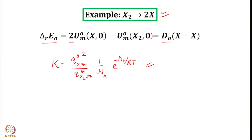An atom can have translational and electronic degrees of freedom — there is no rotation or vibration in an atom. For the molecule X₂, there is translational, rotational, and vibrational degree of freedom, plus an electronic term. For atom X, we need q_translational of X and g_X, the degeneracy of the electronic ground state. For molecule X₂, we need q_translational, q_rotational, q_vibrational, and the degeneracy of the electronic ground state.